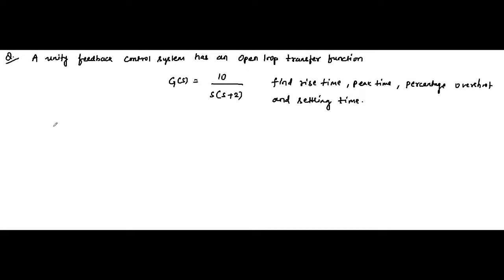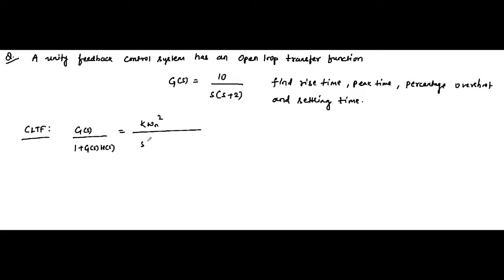For a second-order control system, the general format of the closed loop transfer function G(s) / (1 + G(s)H(s)) is equal to K·ωn² / (s² + 2ζωn·s + ωn²). This is the basic standard format, and we need to convert our given transfer function into this closed loop format.